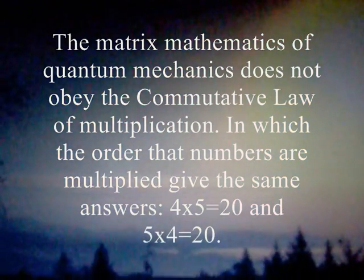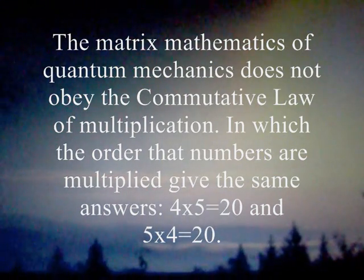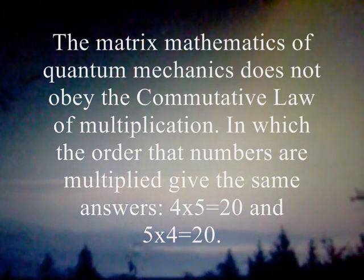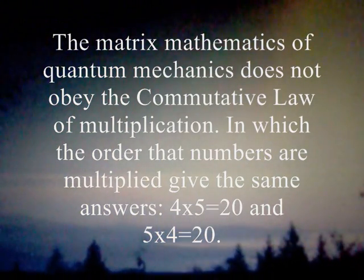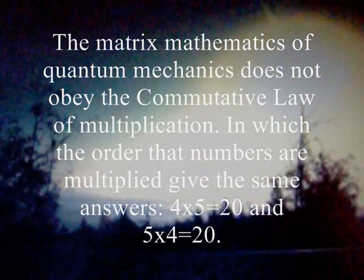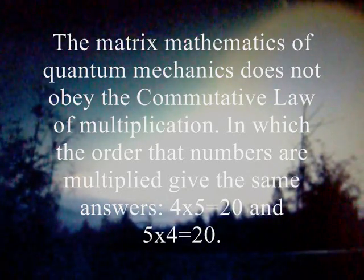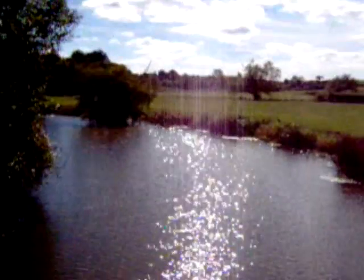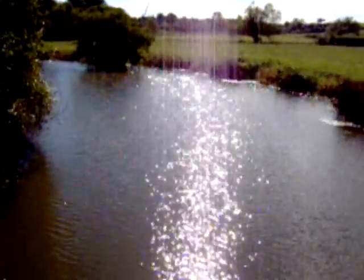Schrödinger's wave equation represents the wave nature of light. We also have Heisenberg's matrix mathematics, representing the particle nature of light.